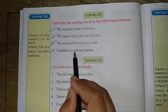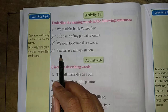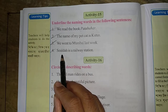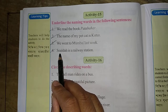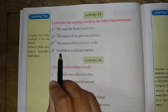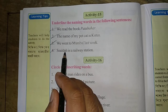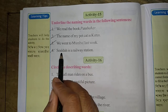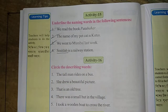Number four: 'Sialda is a railway station.' Sialda is in Kolkata — the busiest railway station in West Bengal. Sialda is a station name, so underline Sialda.